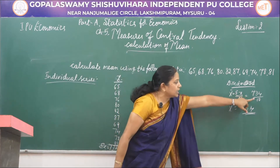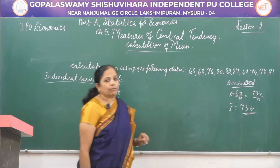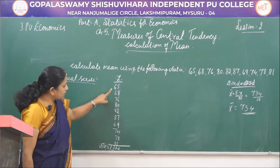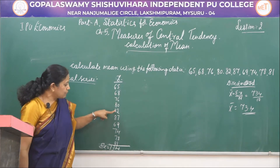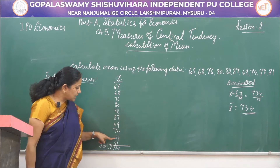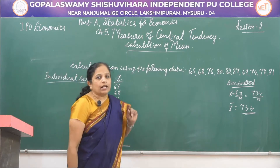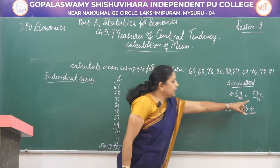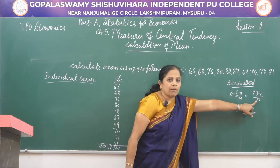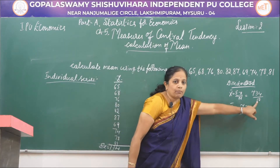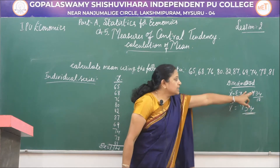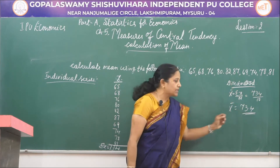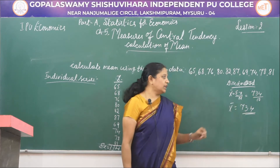734 divided by 10, because we have 10 numbers here — 1, 2, 3, 4, 5, 6, 7, 8, 9, 10. There are totally 10 numbers, so n is 10. That is the number of values, and sigma x, the total sum of all these 10 numbers, is 734.